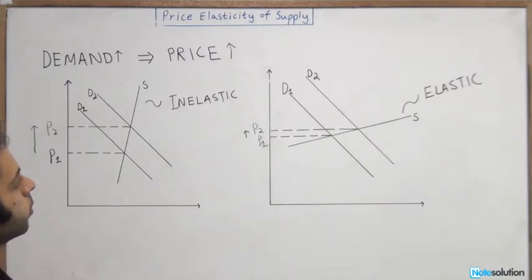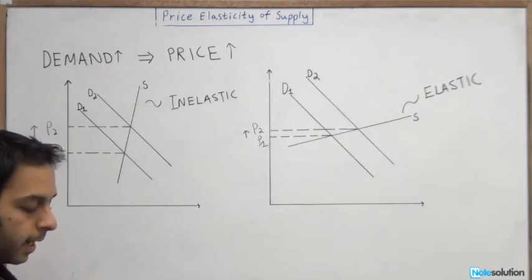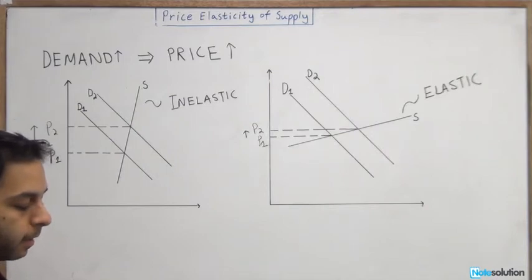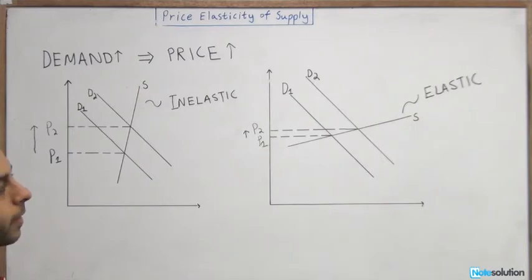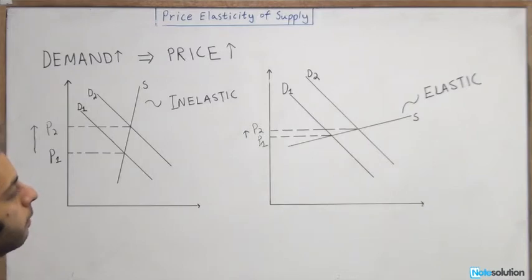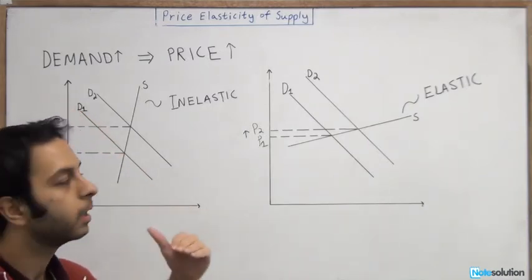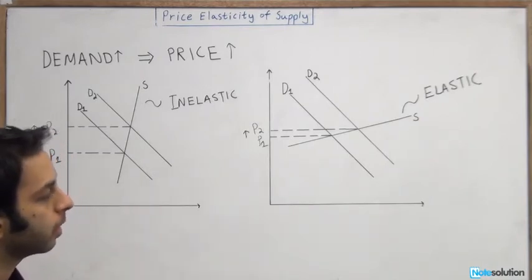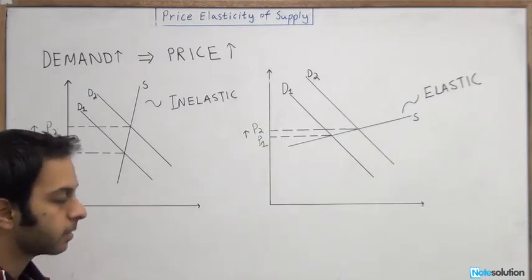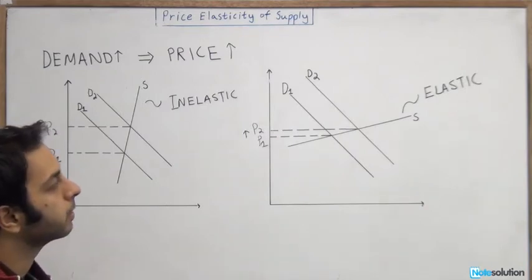Let's see the choices so we can pick the right one. The first one says: as a result, the price of corn will fall, and the less elastic the supply of corn, the smaller will be the effect on the price. You don't even need to read any further once you've got 'fall' in the first blank, because we already know the price is going up — so fall is automatically discounted. The next one also starts with fall, so we're going to discard that one as well.